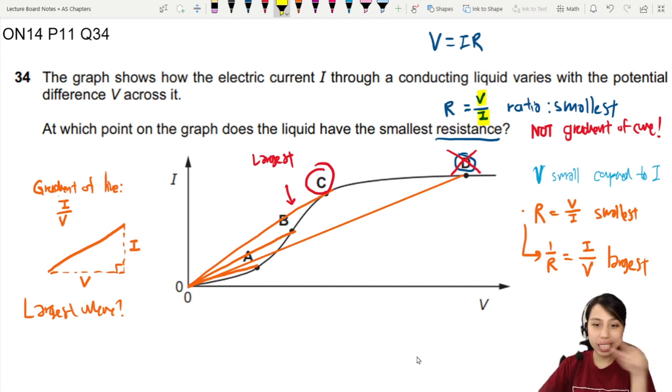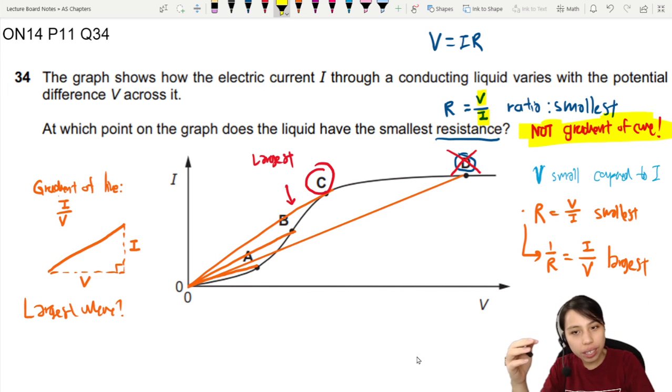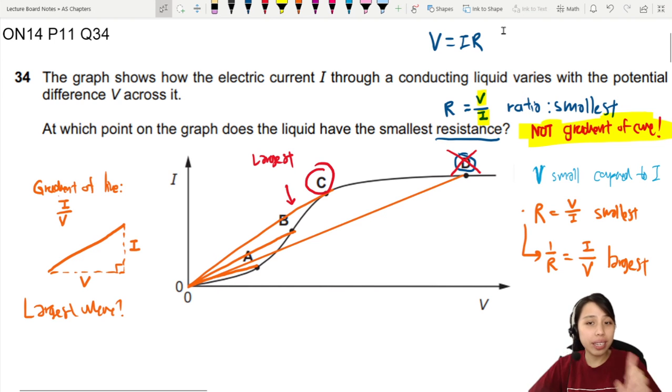So remember once again, these lines we draw is not the gradient of the curve. It's the gradient of these lines that we draw from origin to that point. And that really is what we call the ratio of V over I at each point with respect to origin, of course. All right, so that's all for this question. Be careful when you see curves like this when thinking about resistance. All right, that's all for this video. See you in the next one.